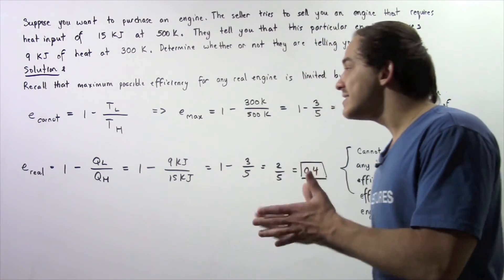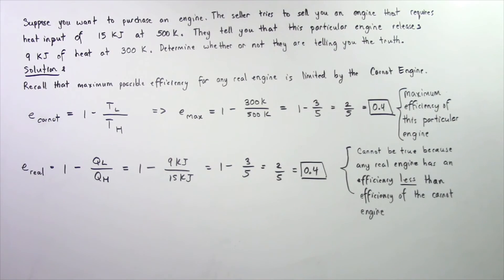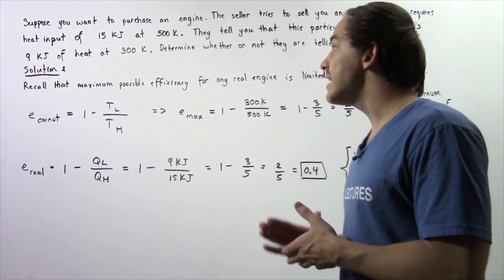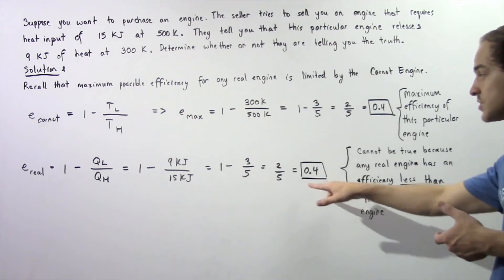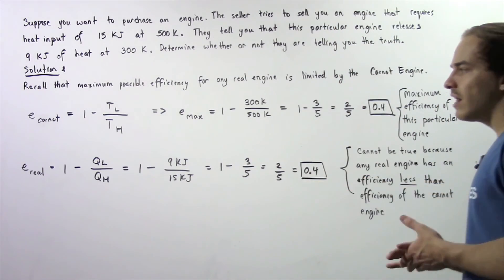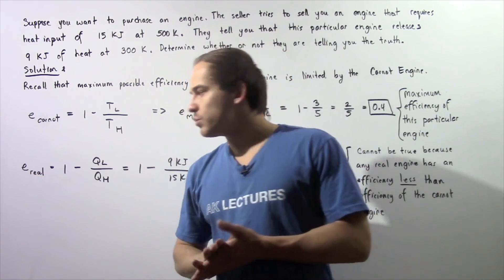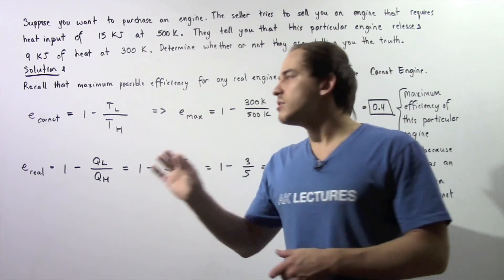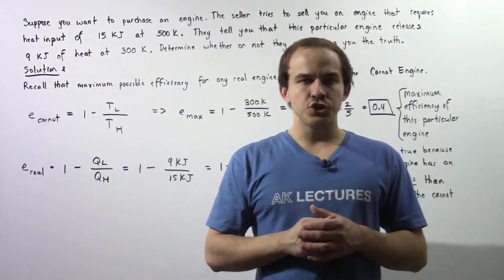This cannot be true because the Carnot engine doesn't actually exist. This implies that the seller must be lying to us, because this value is too high — the efficiency of the real engine must be less than the efficiency of the Carnot engine.